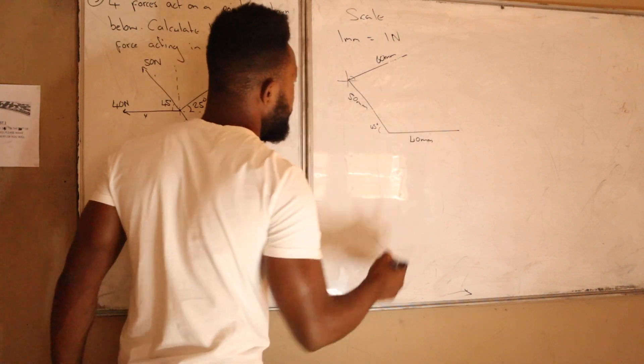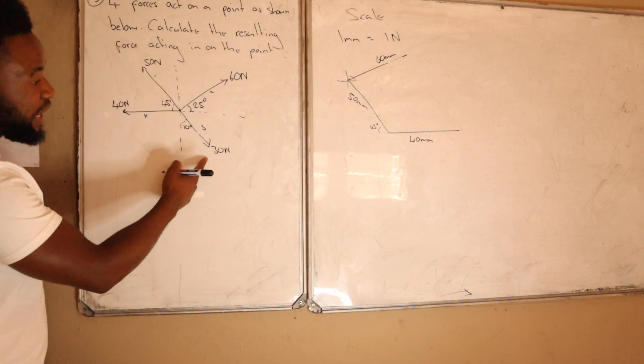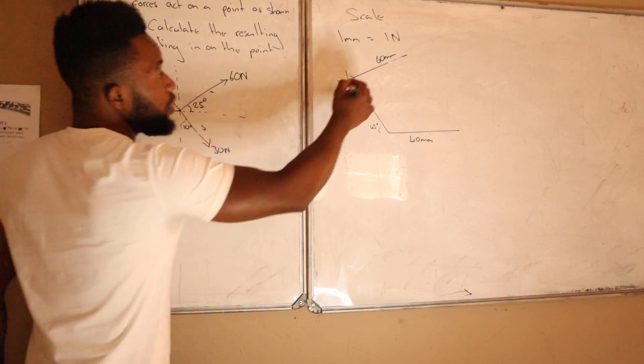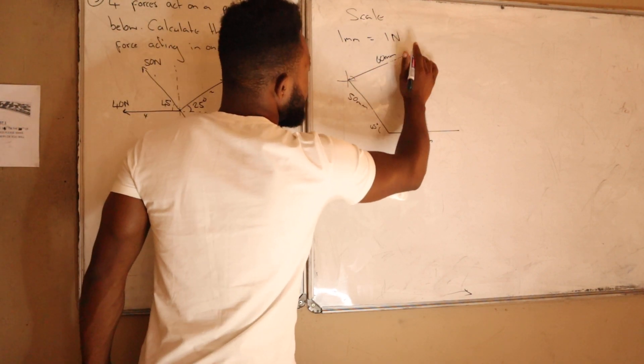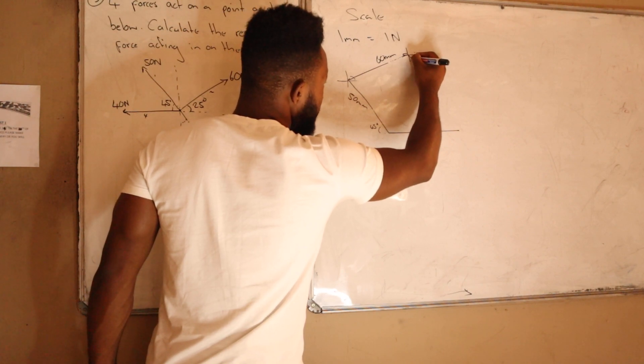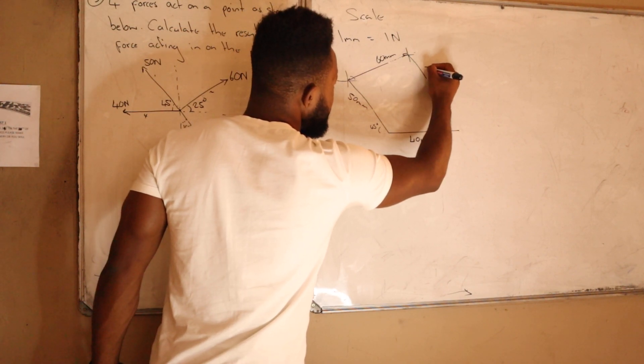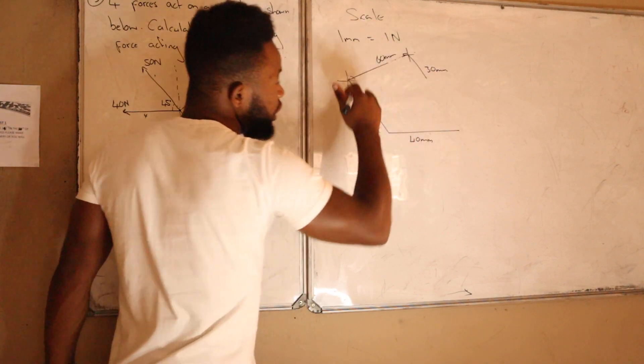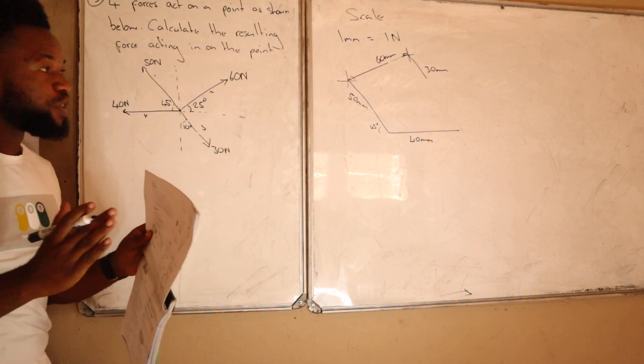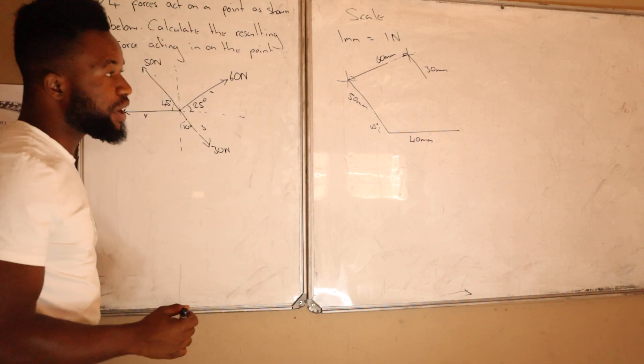And then you also have another line which is coming down at 10 degrees. You draw your T-junction here, and remember this is just a scale. You measure your line which is going down, which is 30 millimeters. So if you can see, I'm trying to obtain a shape - I'm joining all my forces to form one shape.